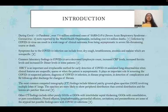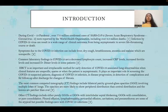HRCT is an important and irreplaceable method for early detection of COVID-19 associated lung abnormalities, when clinical features are non-specific, sparse, or when the patient is asymptomatic. It plays an important role in screening COVID-19 suspected patients, diagnosis of COVID-19 infections, disease progression, detection of complications, and follow-up after discharge to look for changes of fibrosis.